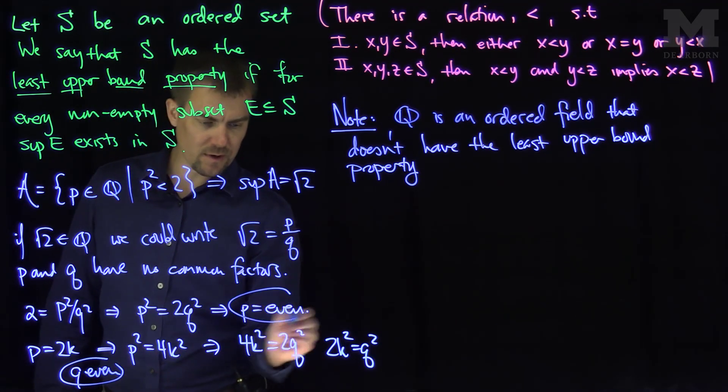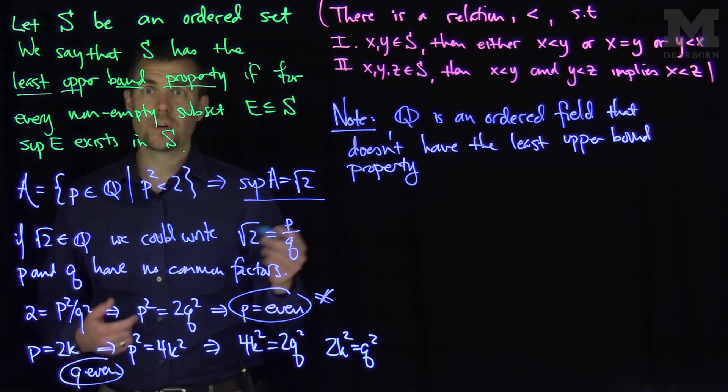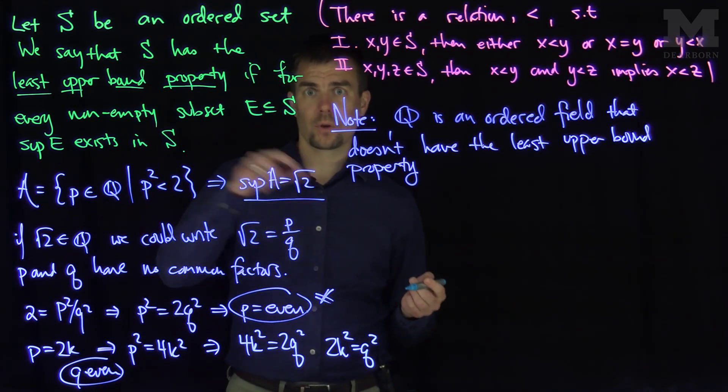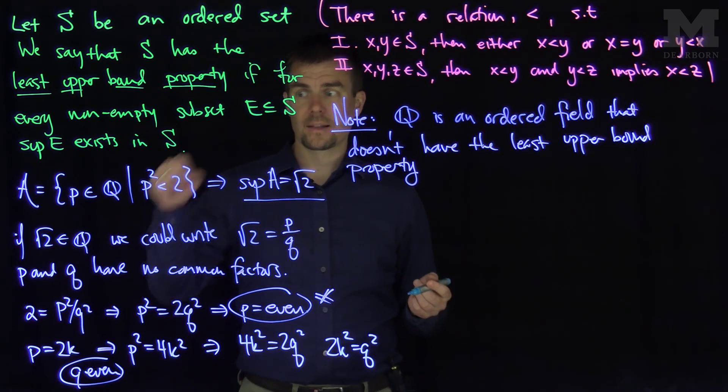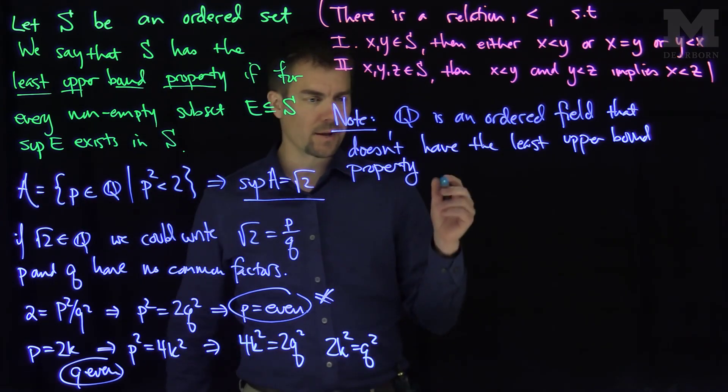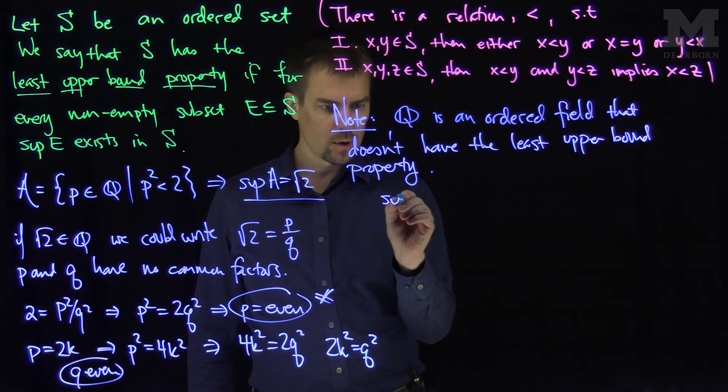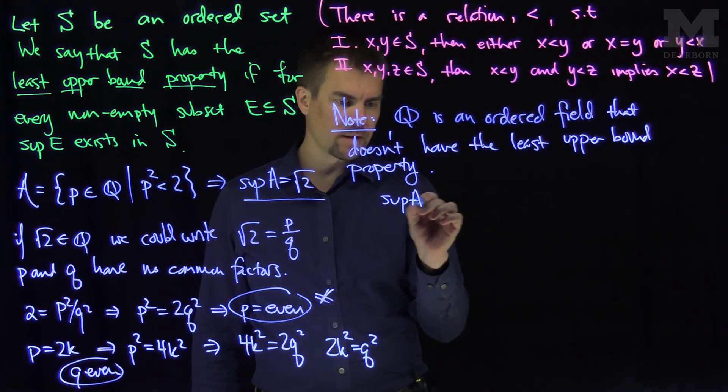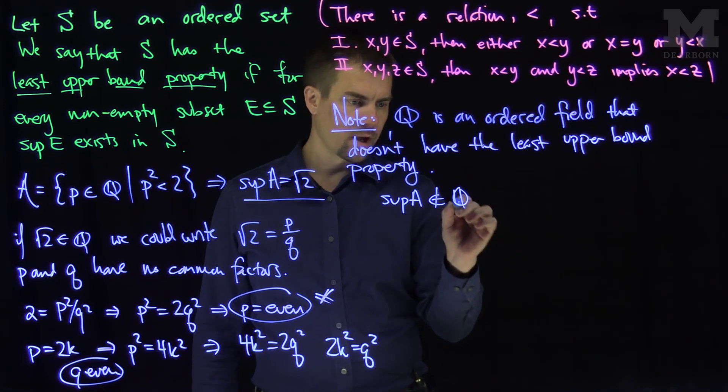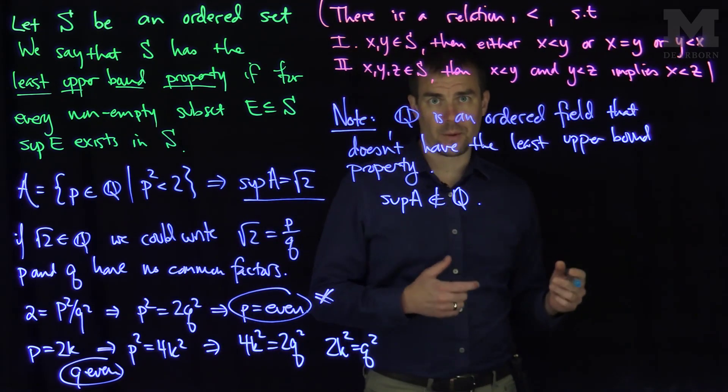And p is even, and that's a contradiction. So the supremum of A is root 2 is not a rational number, which shows that the supremum does not lie in the set Q. So hence, sup of the set A, sup of A is not in the set Q.